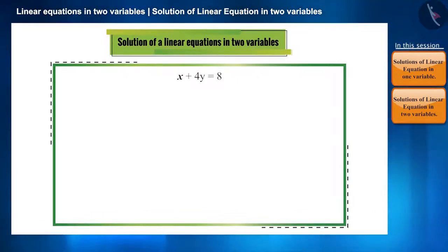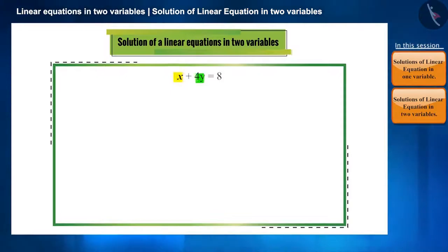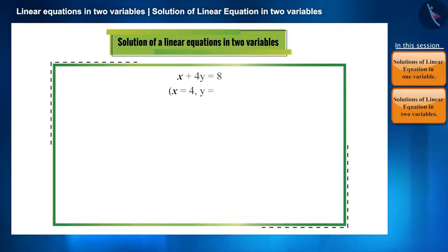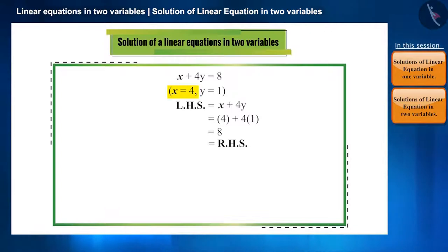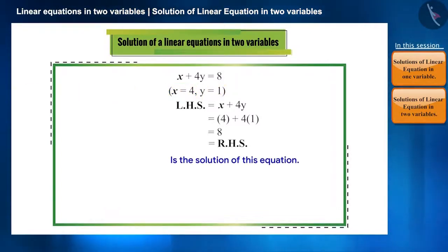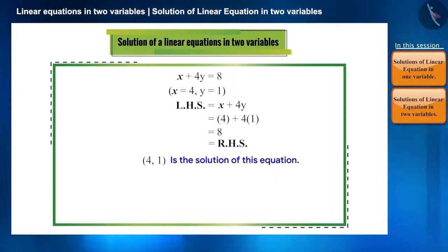The equation x + 4y = 8 has two variables. If we observe, we can say that when the value of x is equal to 4 and the value of y is equal to 1, this equation will be satisfied. Therefore x = 4 and y = 1 is a solution of this equation. We can write the solution in parenthesis in an ordered form as (4, 1).